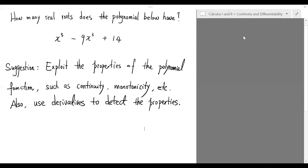Here is the suggestion: we will exploit the properties of this polynomial function, such as continuity, monotonicity, etc., to try to answer the question. Also, we're going to use the derivatives to detect properties such as the monotonicity of this function.